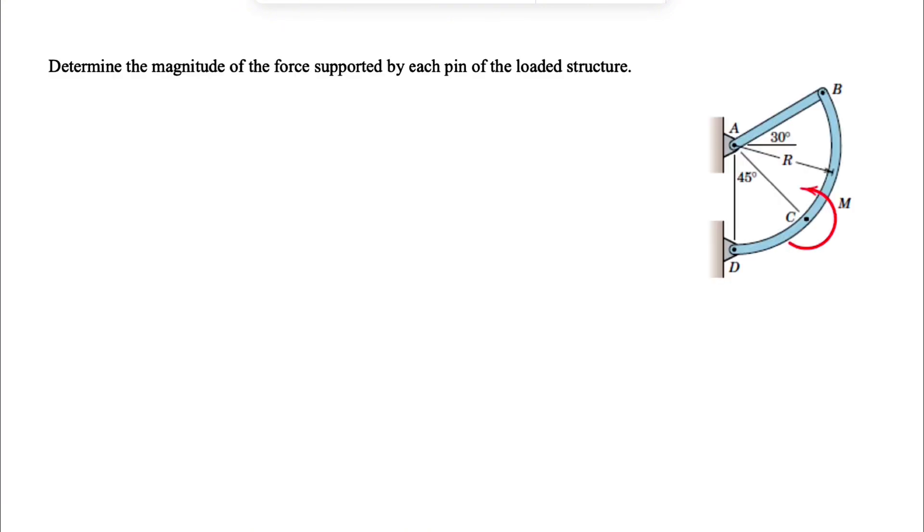In this one, we need to determine the magnitude of the force supported by each pin of the loaded structure. We're going to have three different pins at points A, D, and B. We're going to start with the free body diagram of this part of the frame. Again, we're going to deal with another two-force member. The member AB, we can call it FAB. At point D, we also have a pin.